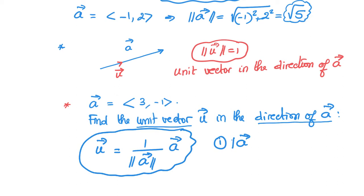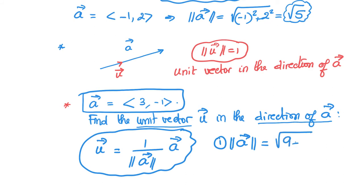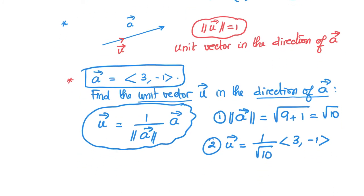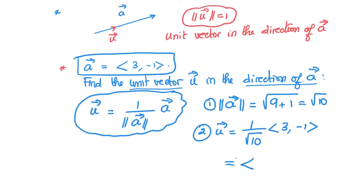In this particular example, the magnitude of a is the square root of 9 plus 1, so it's the square root of 10. Therefore the unit vector u is 1 over the square root of 10 multiplied by the vector (3, -1), which gives us (3/√10, -1/√10).